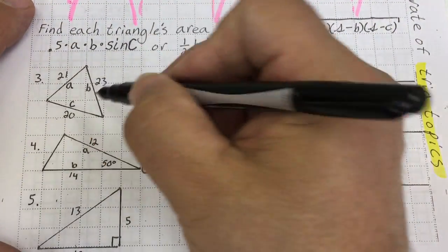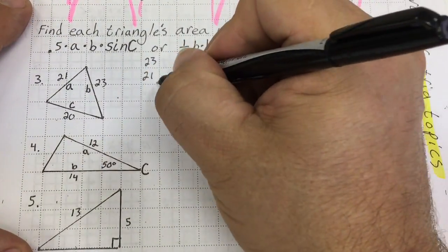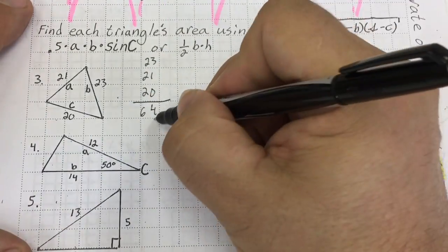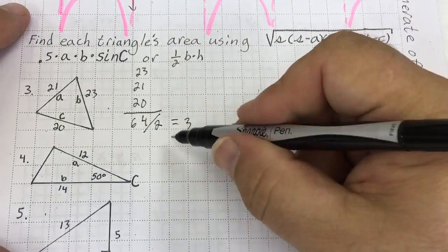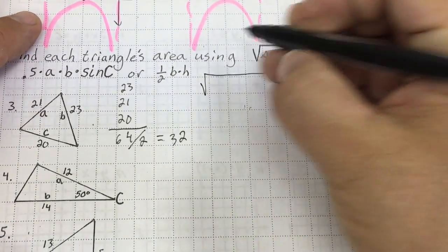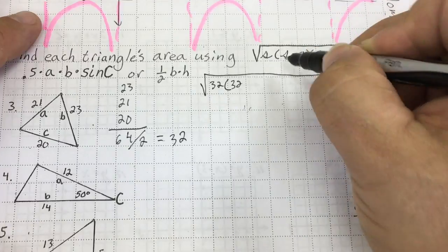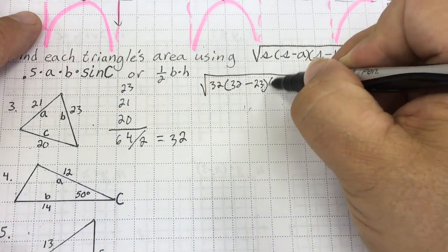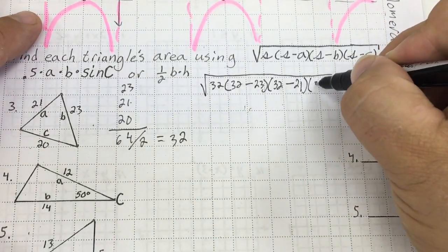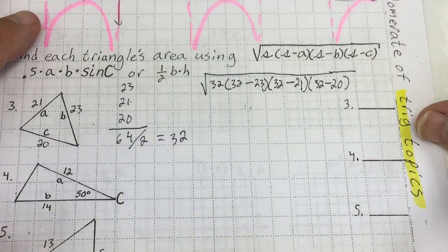This is called Heron's formula. I add them all up: 23 plus 21 plus 20, and I get 64. Then I divide it by 2, and that gives me 32. Then I take that 32 and put it in the big formula. So it's the square root of 32 times 32, notice S and S minus each number: 32 minus 23, 32 minus 21, and 32 minus 20.